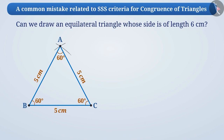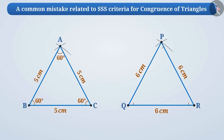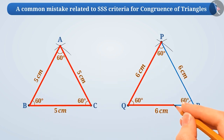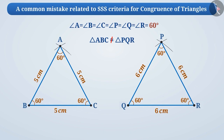Can we draw an equilateral triangle whose side is of length 6 cm? If we draw triangle PQR using the same method, we get an equilateral triangle. Measuring its angles, we observe all angles measure 60 degrees. We can see that all angles of both triangle ABC and triangle PQR are 60 degrees. So, are they congruent? No, because the lengths of their corresponding sides are not equal.